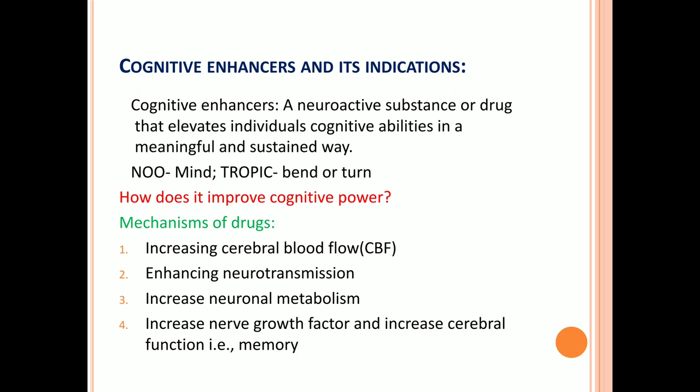The pharmacological name for cognitive enhancers is nootropics. How do they improve cognitive power? There are four mechanisms: number one is increasing cerebral blood flow. If cognitive function or memory loss has occurred, it may be due to damage in cerebral blood flow towards the brain. So increasing cerebral blood flow can stop dementia.